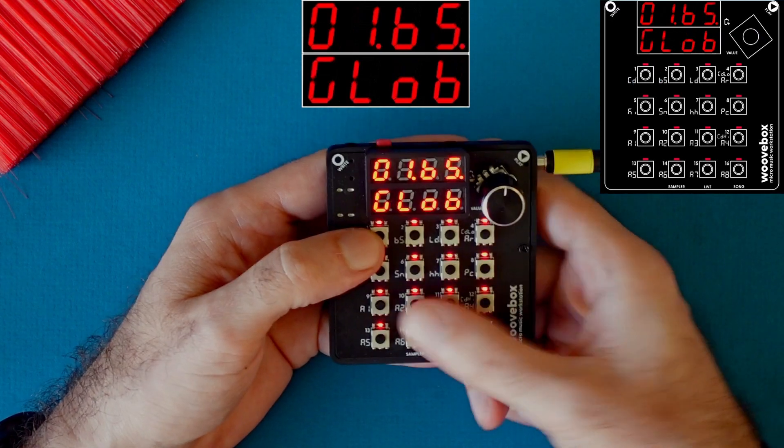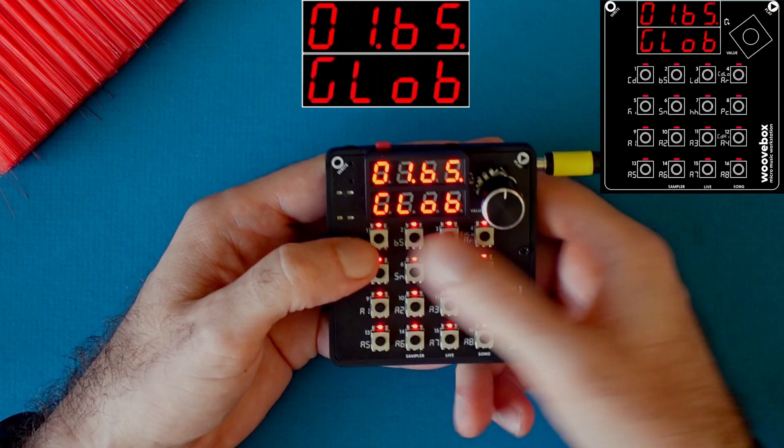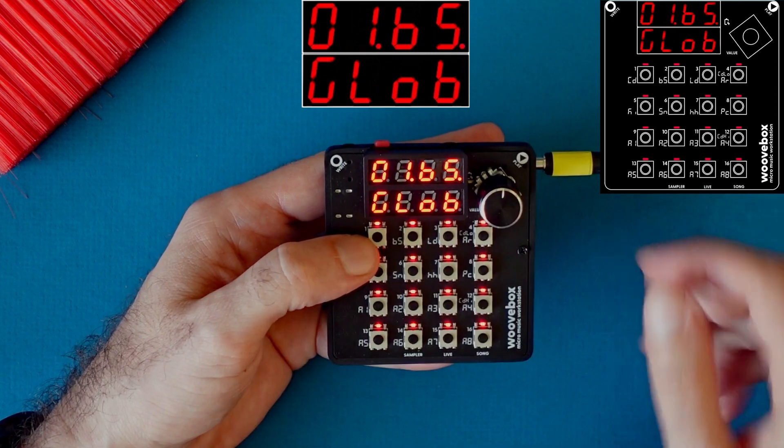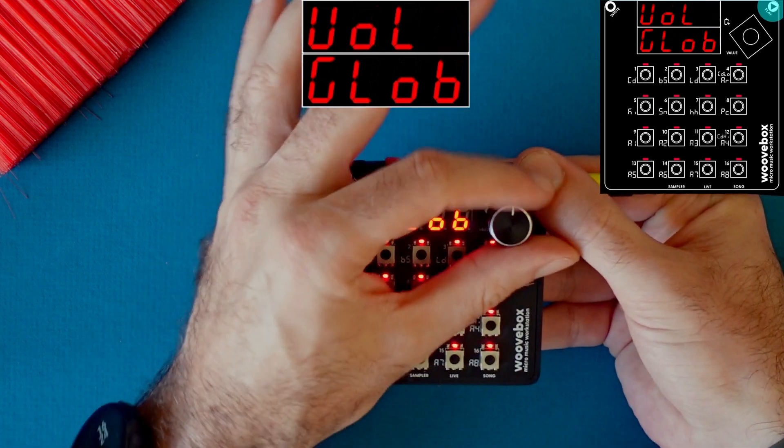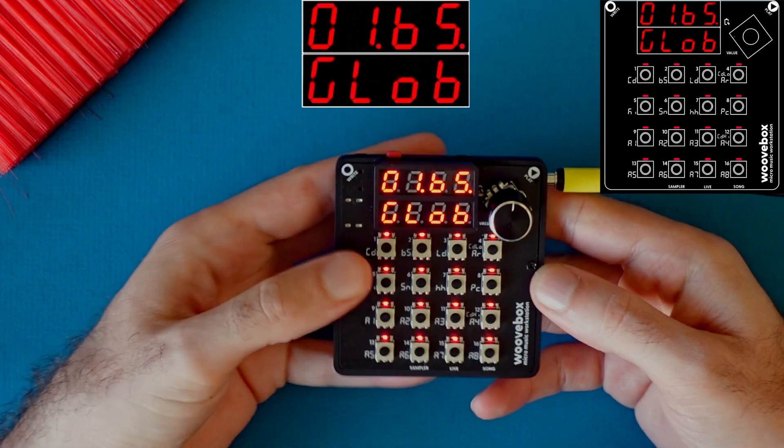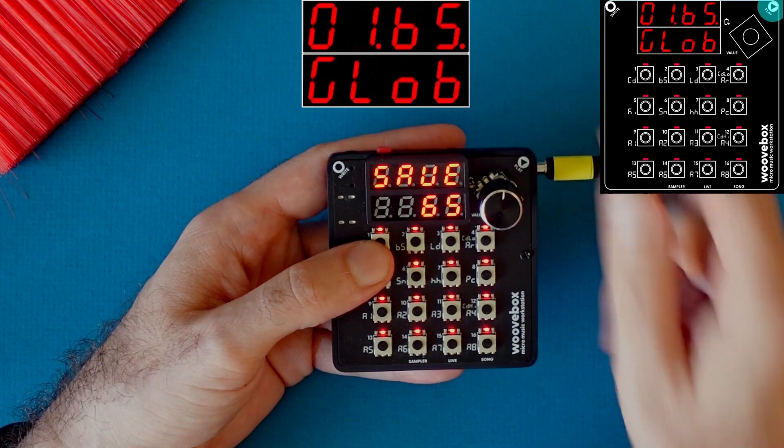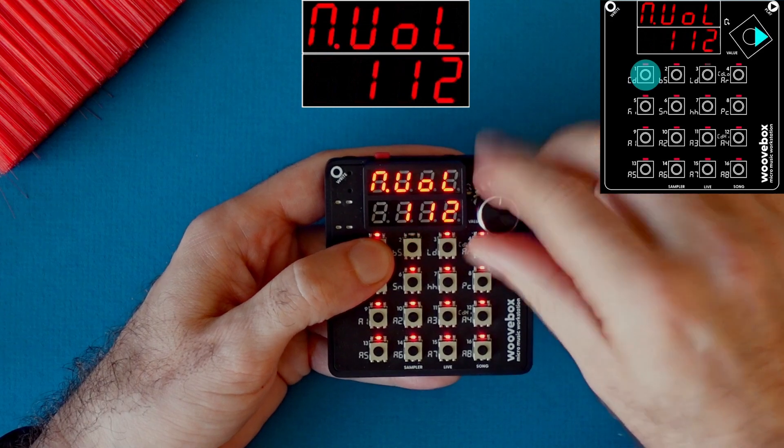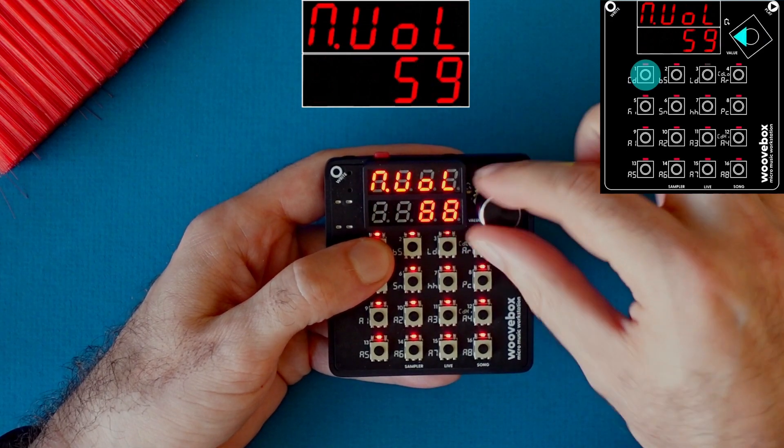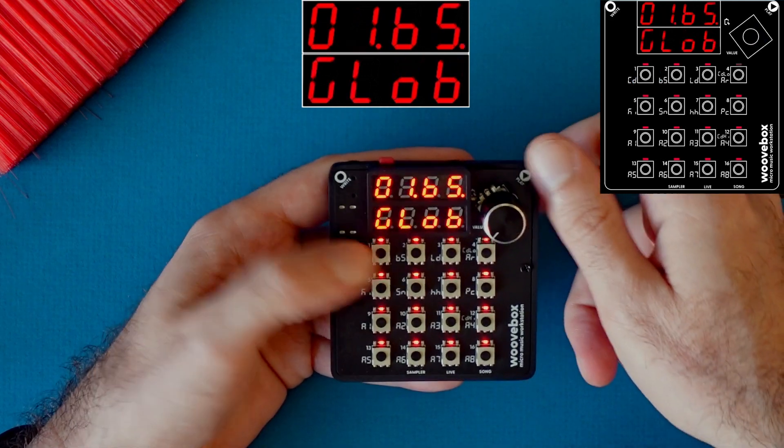The first one on the global page is master volume. This is actually the master volume of the track, not the whole Woofbox. If you want to change that volume, you hold play and turn the encoder. So right now we're on the bass track and I can change the volume, turn it up or down.